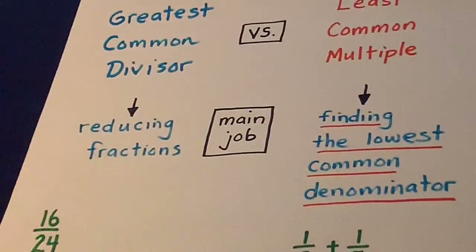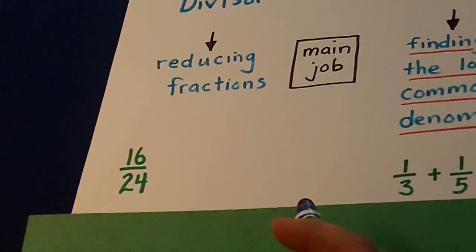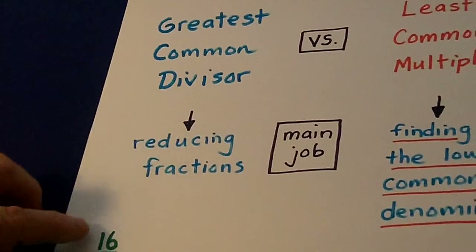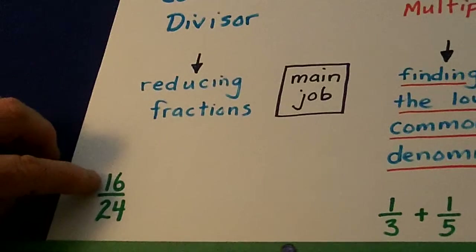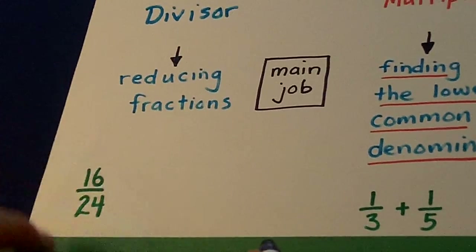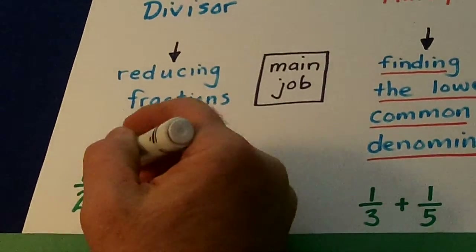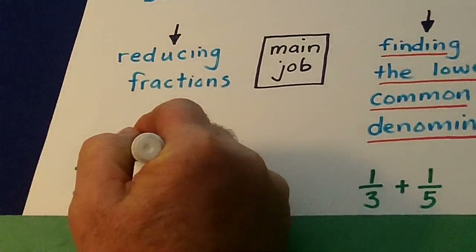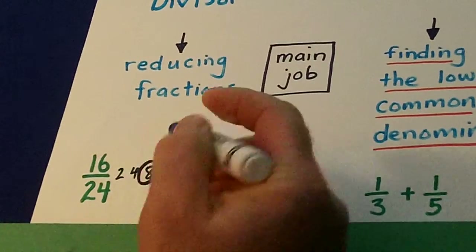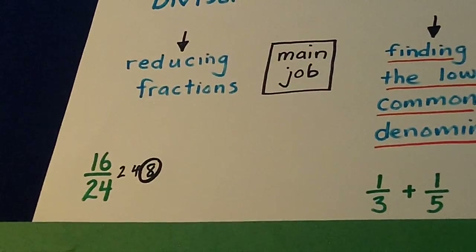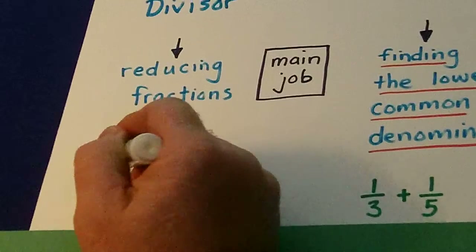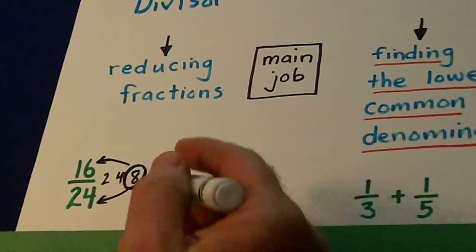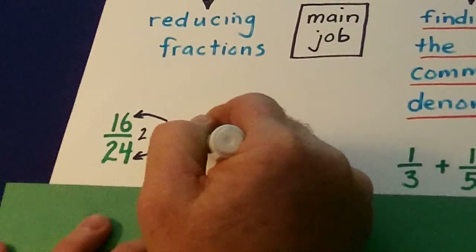The greatest common divisor — greatest means biggest. What's the biggest number that can be divided into 16 and 24? Well, 2 can be divided into them, and so can 4, but 8 is the greatest common divisor. Common means it can go into both. And so when we reduce, we get 2 thirds.